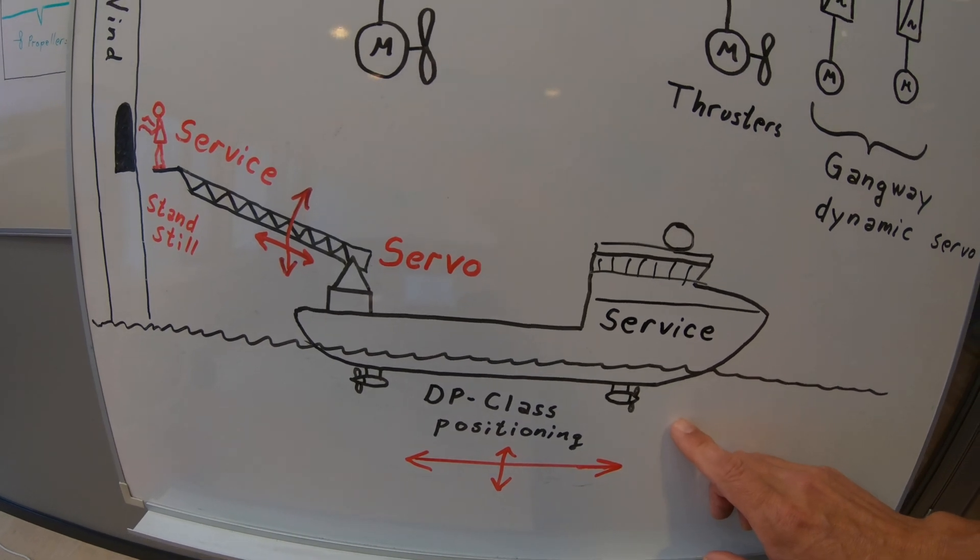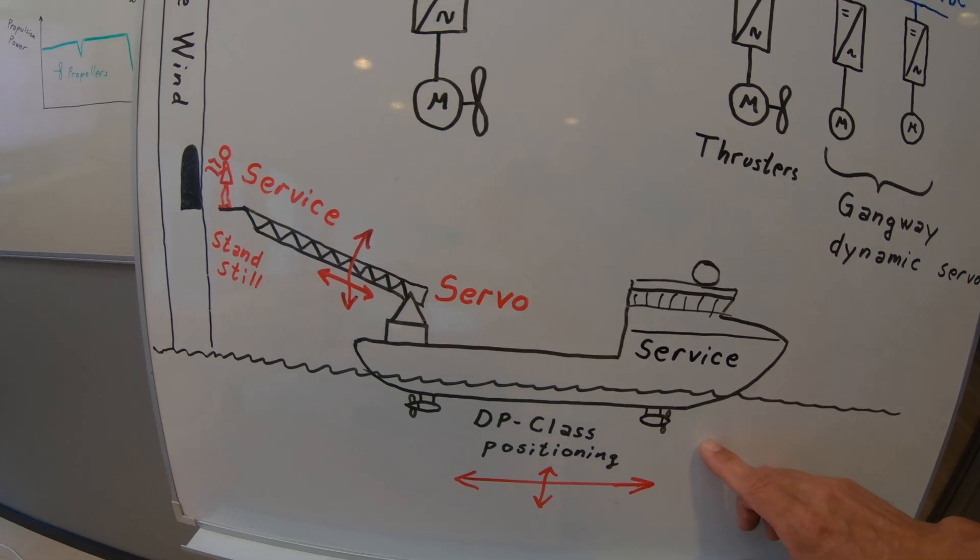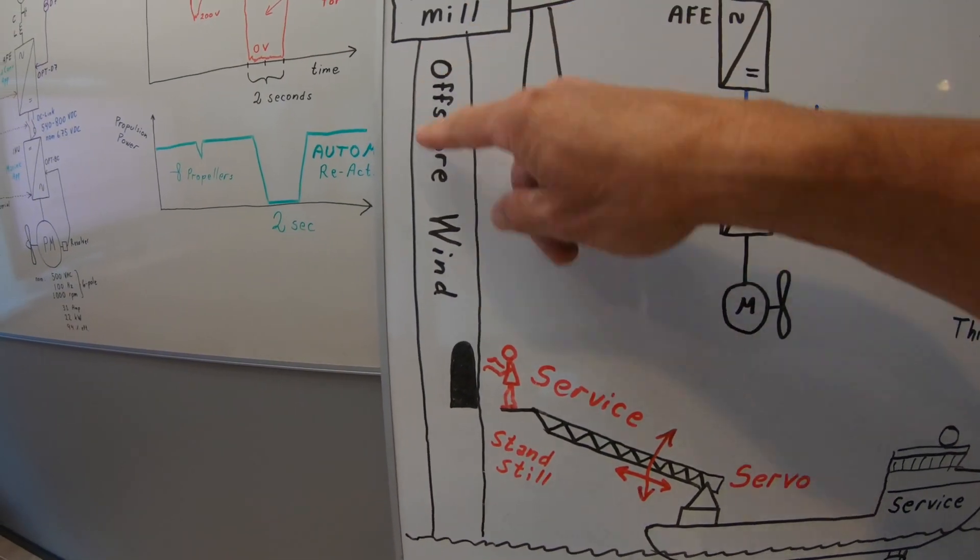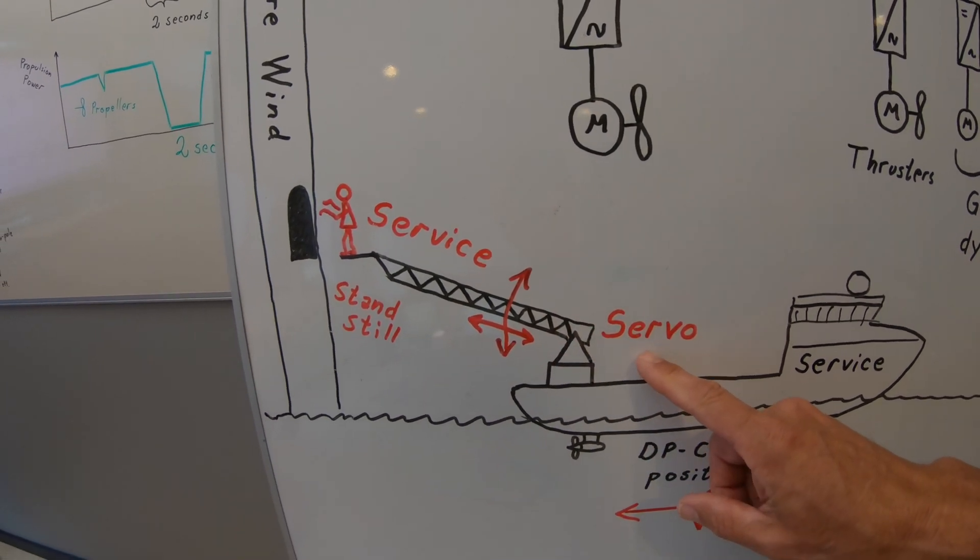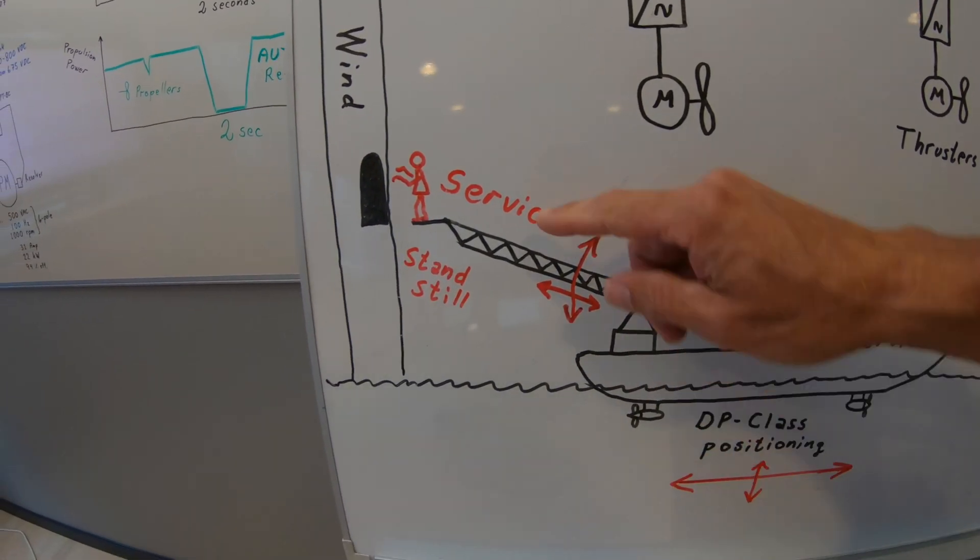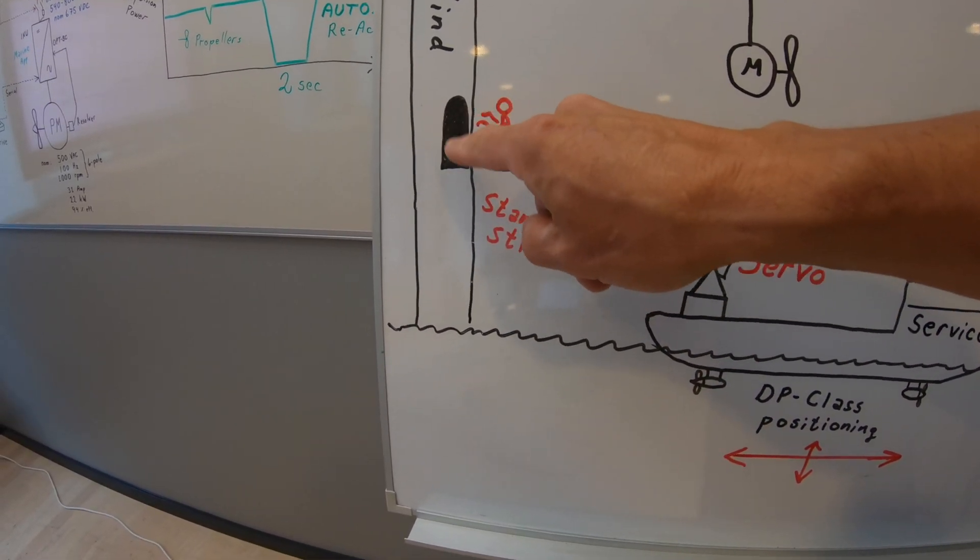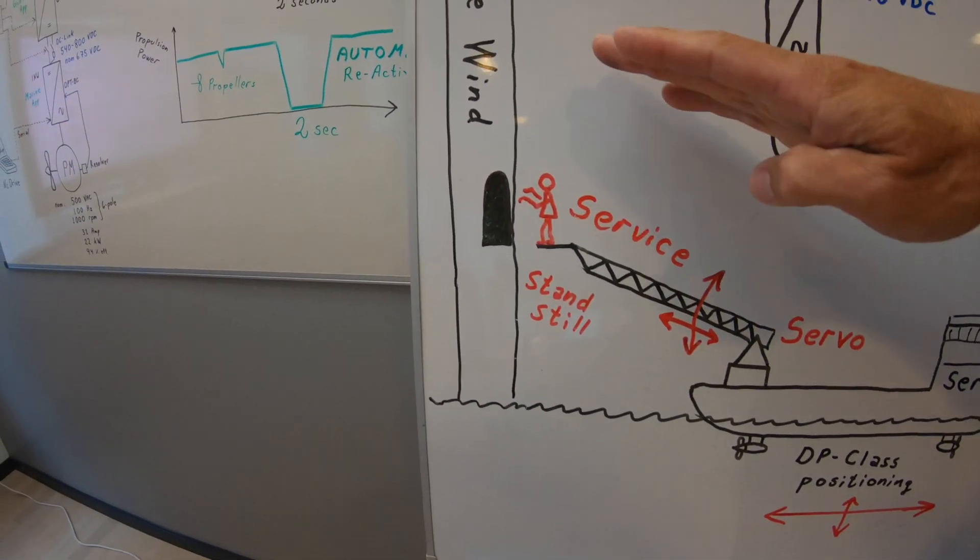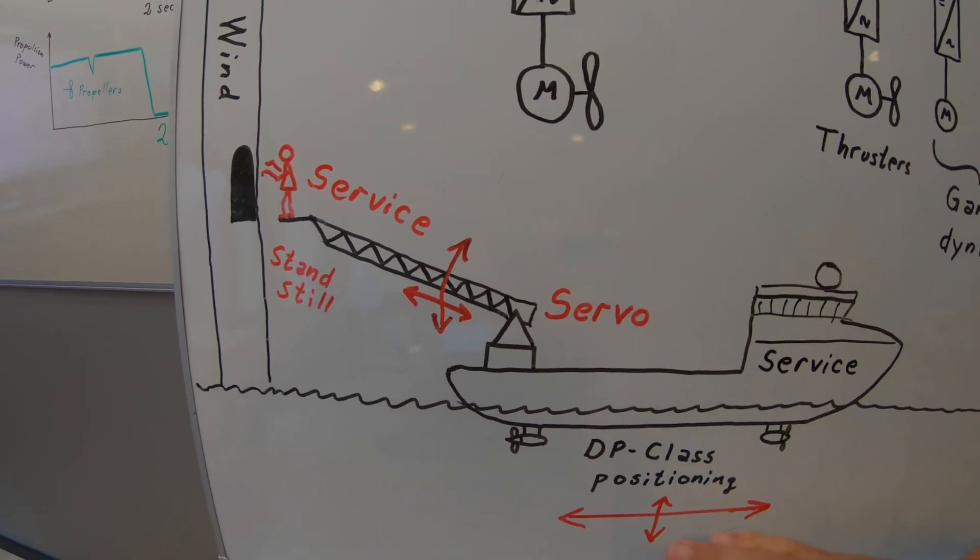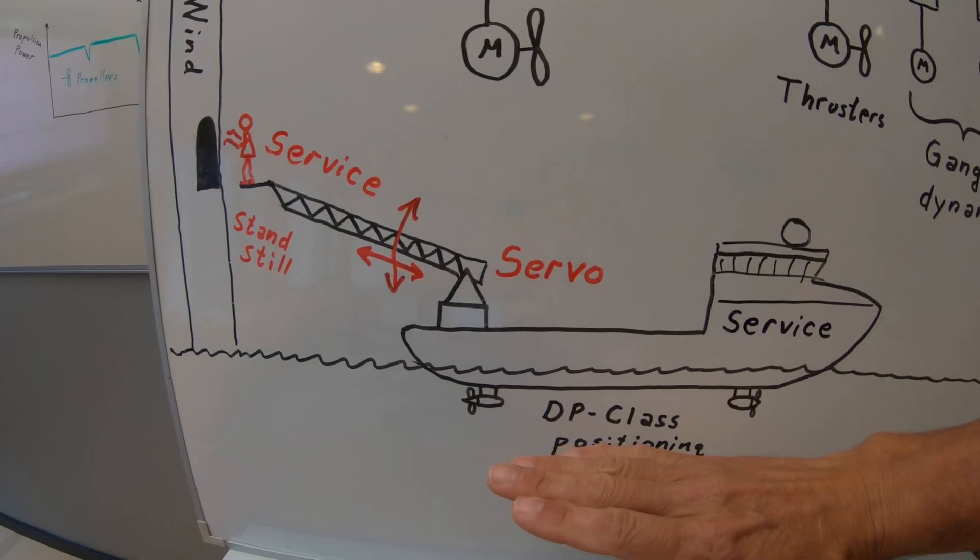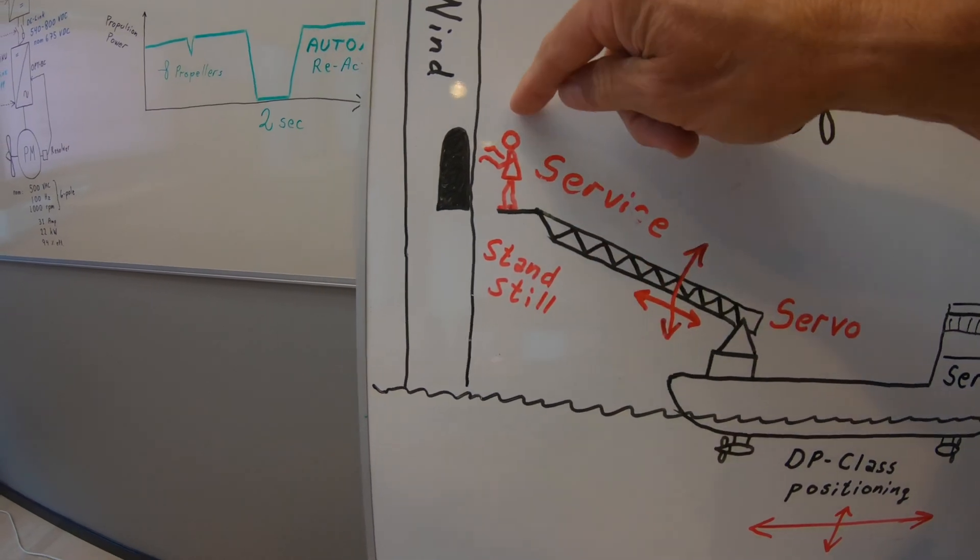Typical application where we see the requirement for undervoltage ride through is these service vessels for windmill maintenance. They can have quite sophisticated gangway systems that are servo operated, electrical servo operated. And then you have the service guy standing here, positioned standstill in front of the door or platform of the windmill, regardless of the waves and the current and the wind. The ship will stay into position and also the gangway will operate in all axis to keep this guy stable.